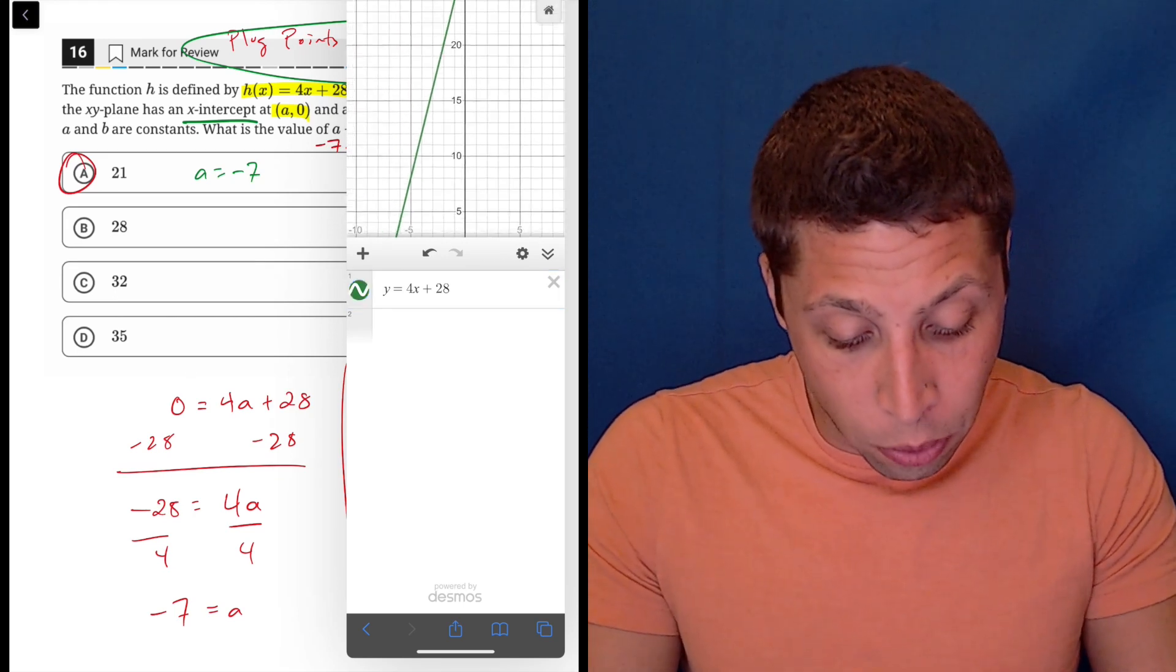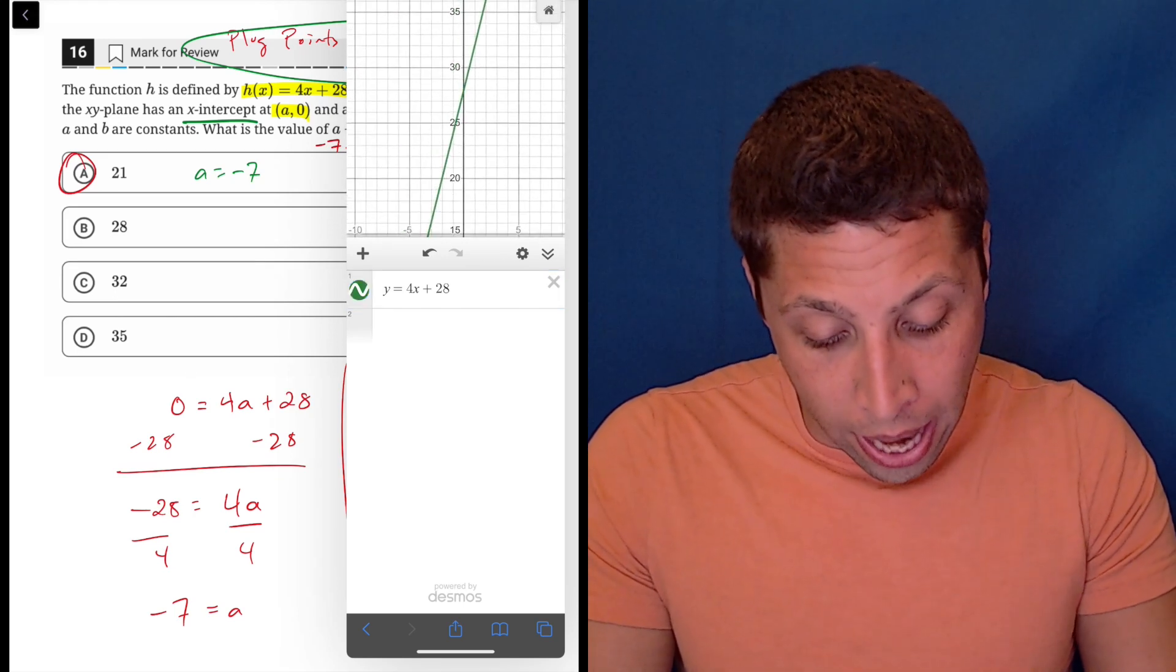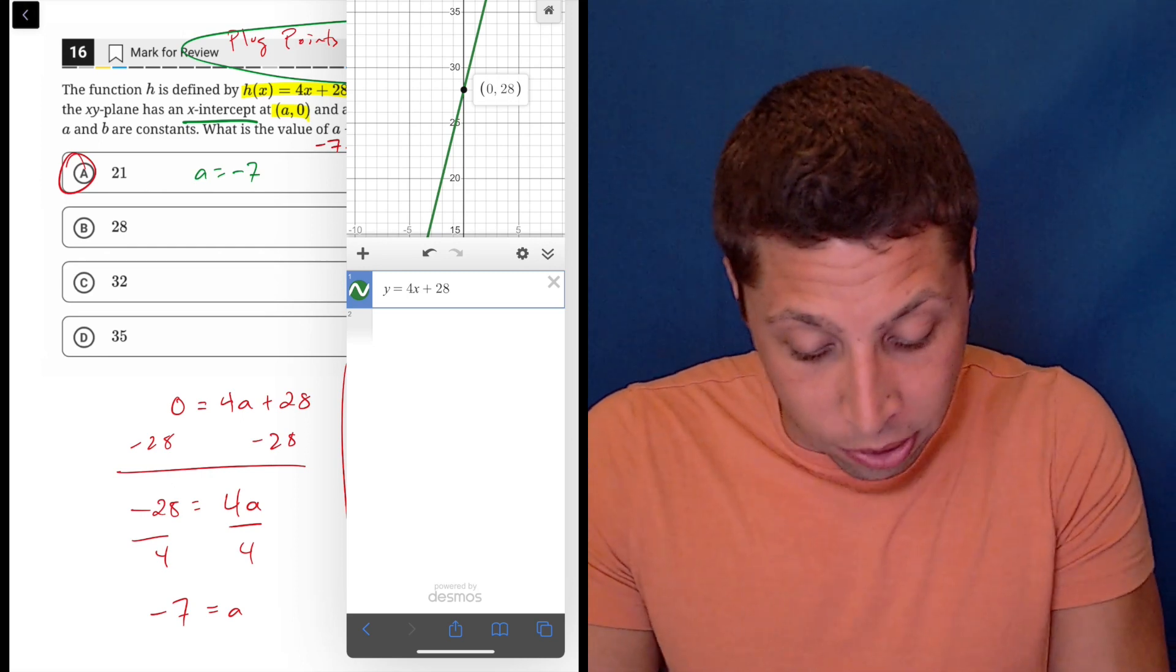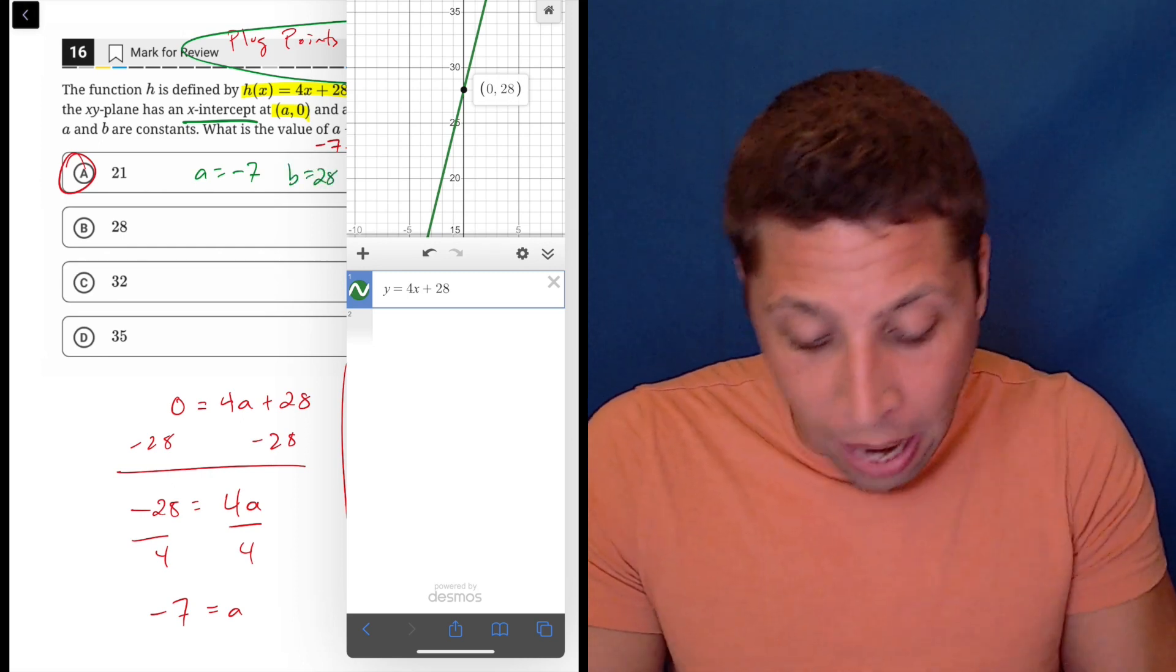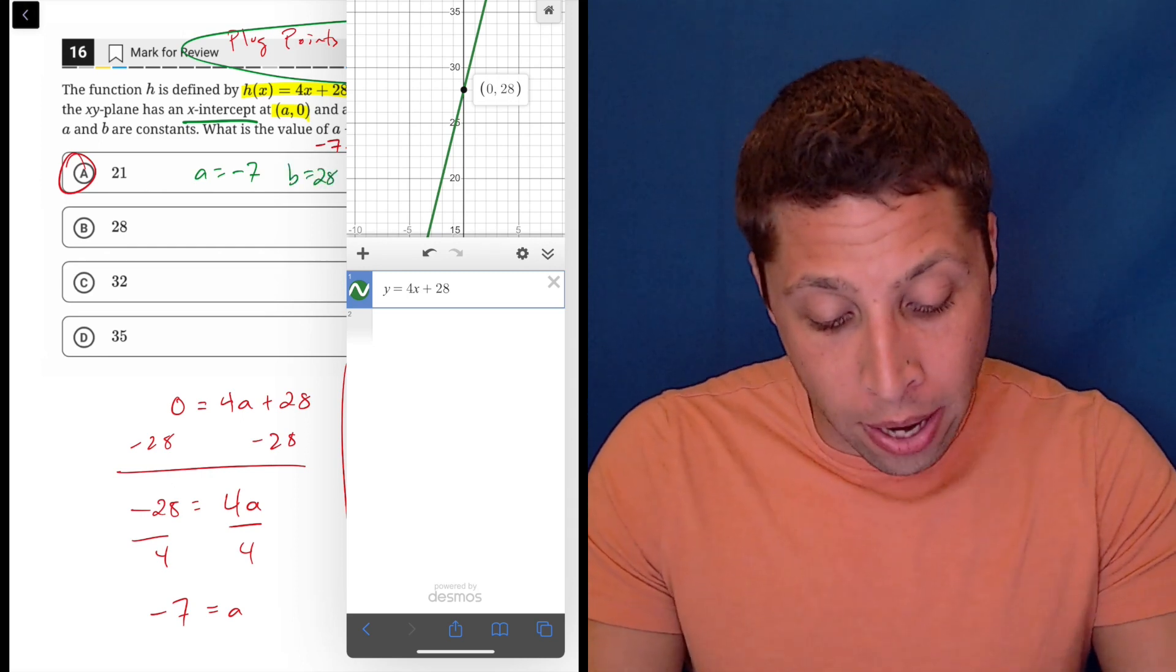And then I've got to scroll to find the y intercept, but luckily it's up here and I can just tap that as well. And it gives me the 28. So b is 28 and we would still get the same thing, 21.